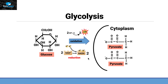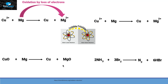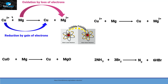Before moving forward, let's look at the details of oxidation and reduction. There are four different criteria to understand these reactions. The first criteria is the gain or loss of electrons. If a molecule loses electrons — as in this reaction where magnesium loses an electron and converts into a magnesium ion with a +2 charge — then magnesium is oxidized. On the other hand, copper already has a +2 charge and gains electrons from magnesium, so copper gets reduced.